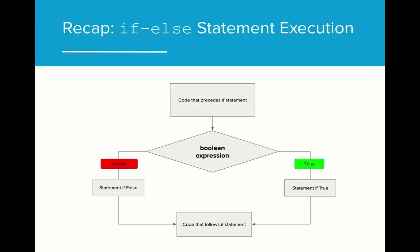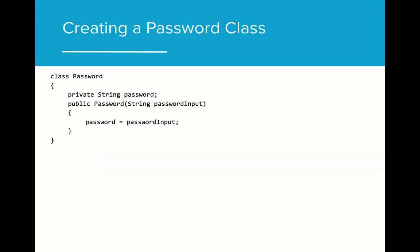In previous lessons, we learned about how to use if-else statements to create alternate paths that execute different commands depending on the outcome of the Boolean expression. Using what we've learned about if-else statements, let's implement a password class. Imagine we were building a program where users had to create and input a password in order to create an account on our site. We might start by creating a password class that takes a password string as its input and sets the value of the private string password to the value input by the user. Here is an example of what that might look like.